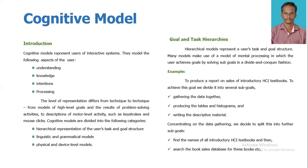First, we have to gather the data together. Next, we have to produce the tables and histograms. And finally, we are writing descriptive materials. Concentrating on the data gathering, we further decided to split this into sub-goals: find the names of all introductory HCI textbooks, and then search the book sales database for these books.